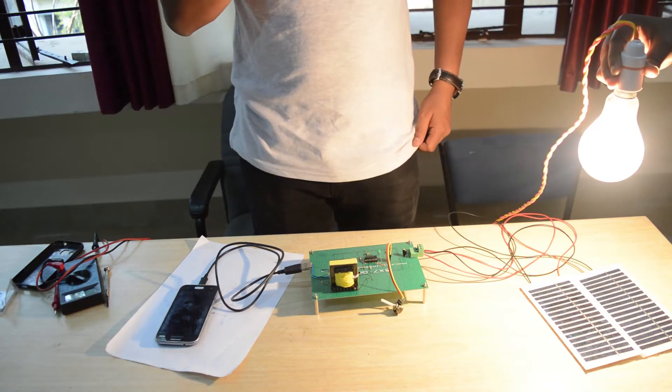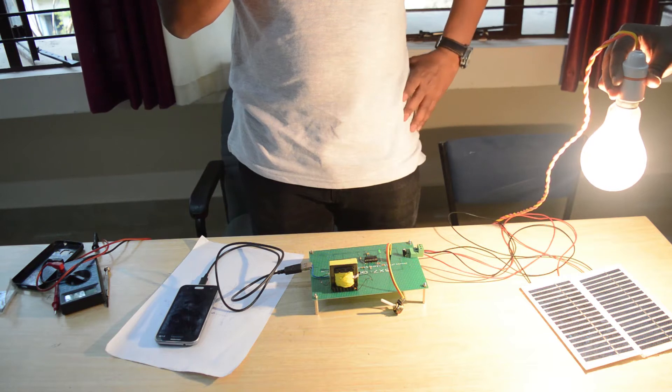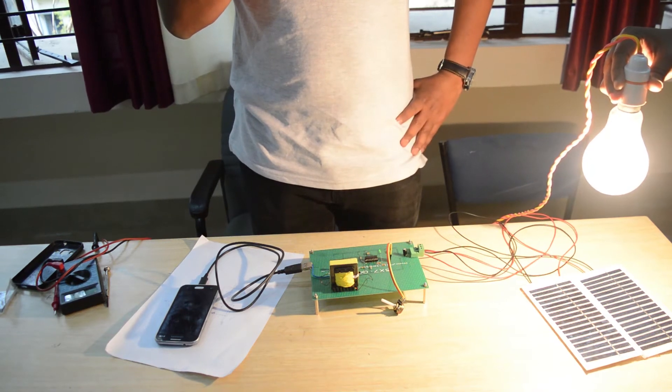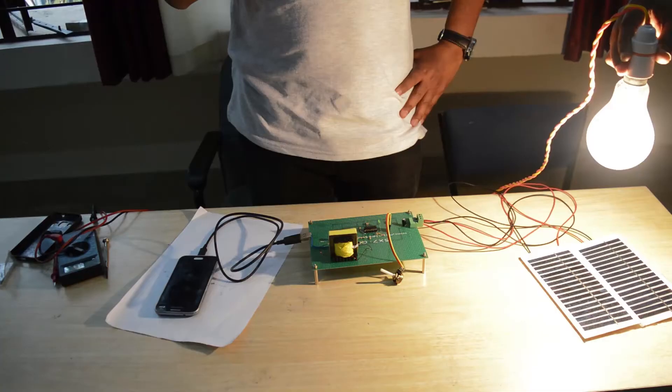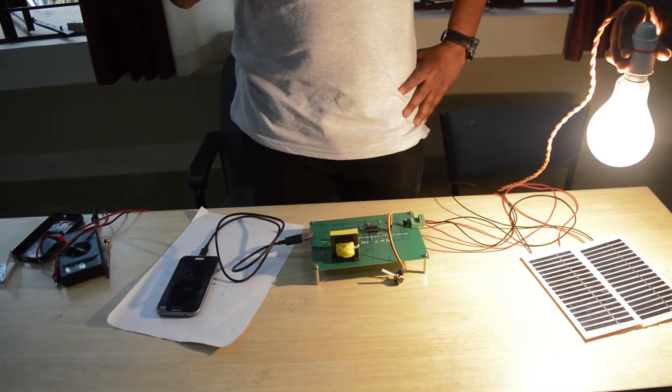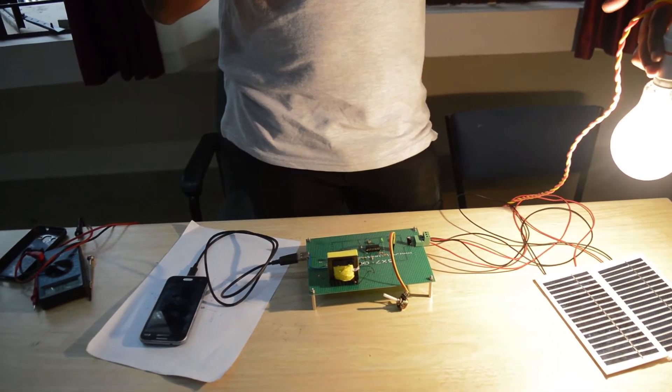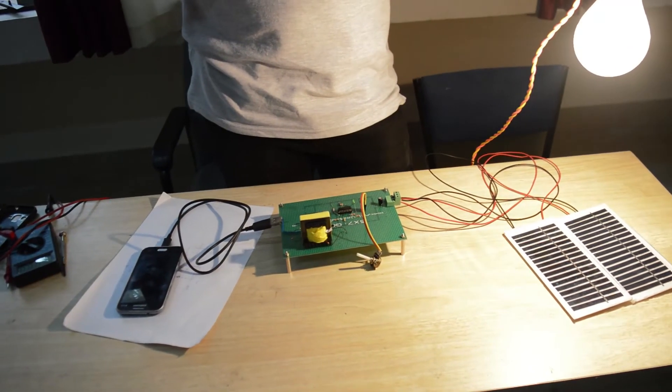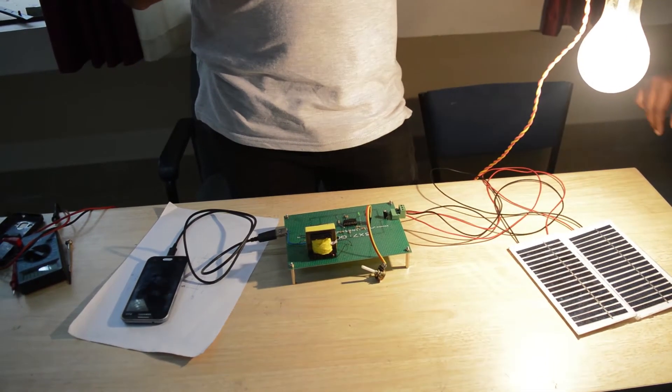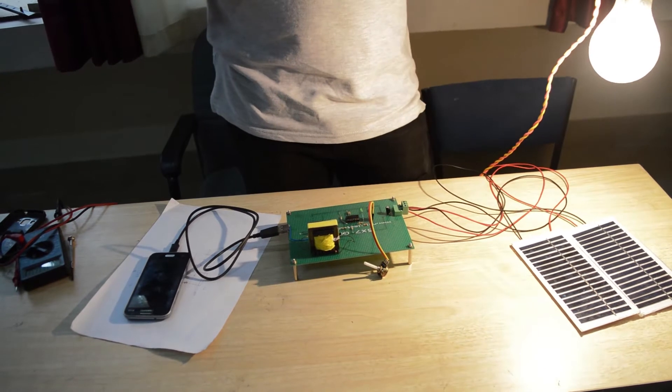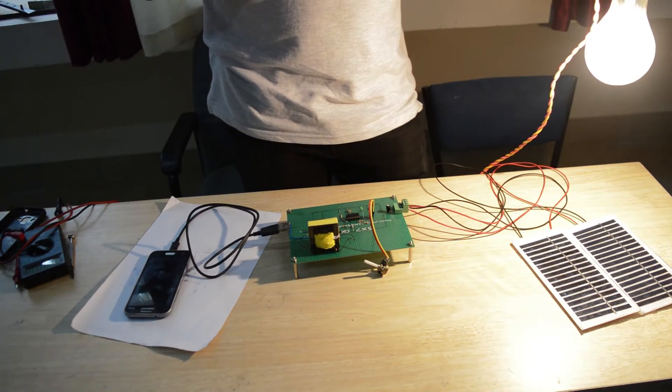My name is Gautam Raikar and today we are going to demonstrate my project, which is a solar-powered mobile phone charging system. We have two solar panels here, each of them around 7.5 volts.